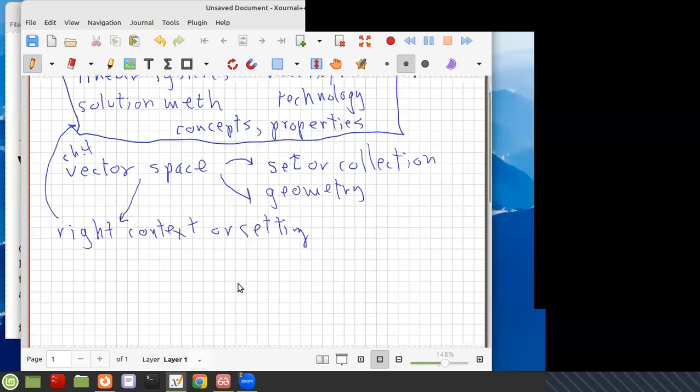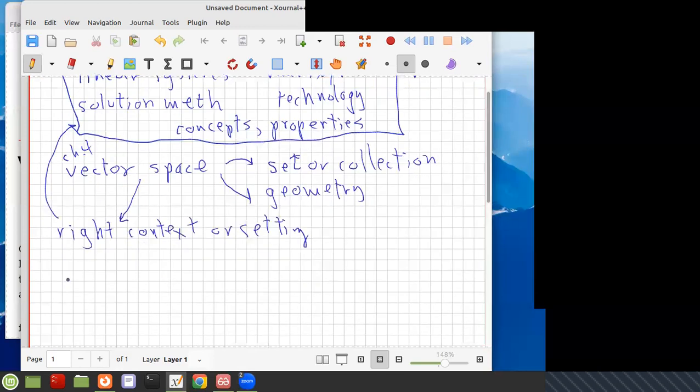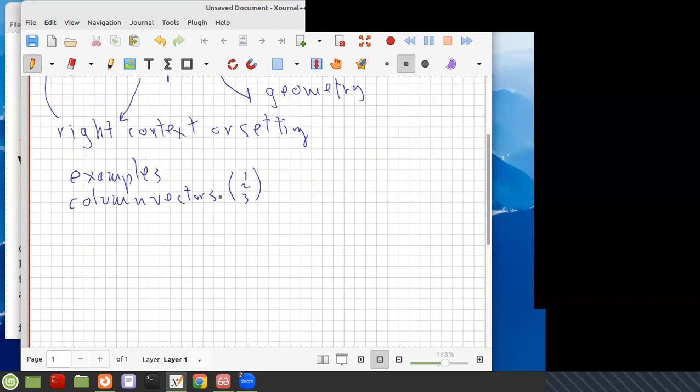So the right setting or context, and the way we're going to approach this is first examples. We're going to have examples of vector spaces. They'll be concrete, they'll be different though. For example, we have column vectors. That's the ones you know about, like this, the vectors in columns. But there's no real reason you just have to have rows. You could also have row vectors.